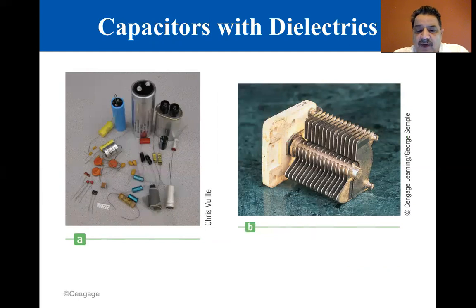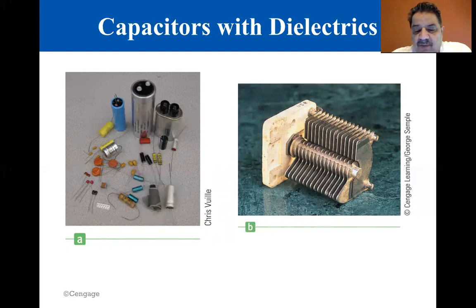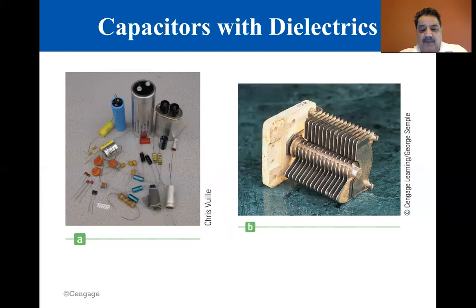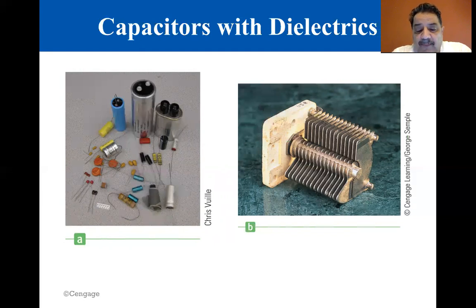The left hand figure shows a variety of commercially available capacitors. The right hand figure is a variable capacitor. Variable capacitors are used in radios and adjust the frequency. What you have is the areas of the plates increasing as those plates are moved out of position. You have very low capacitance. As you bring the plates closer and closer together, you increase the capacitance. That ends this section. The next section we'll cover is a subsection of 16.8, an atomic description of dielectrics.